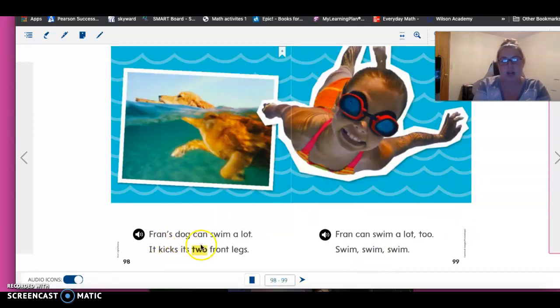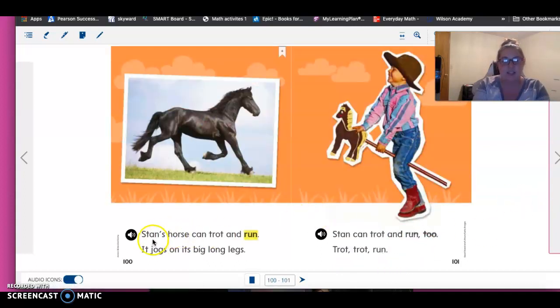Fran's dog can swim a lot. It kicks its two front legs. Fran can swim a lot, too. Swim, swim, swim. Stan's horse can trot and run. It jogs on its big, long legs. Stan can trot and run, too. Trot, trot, trot.